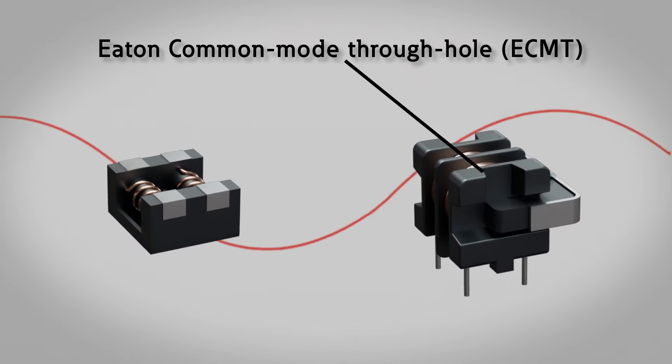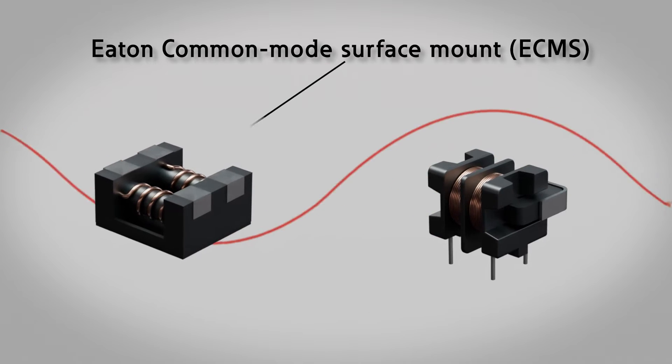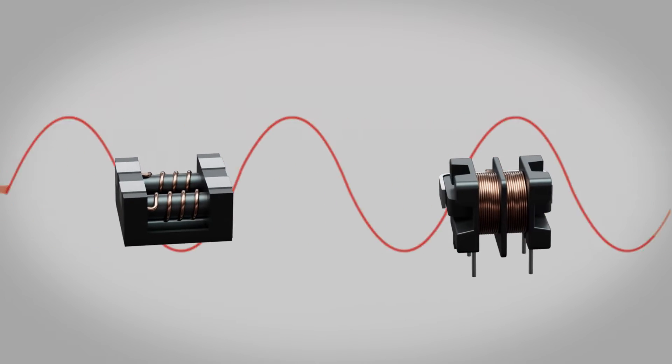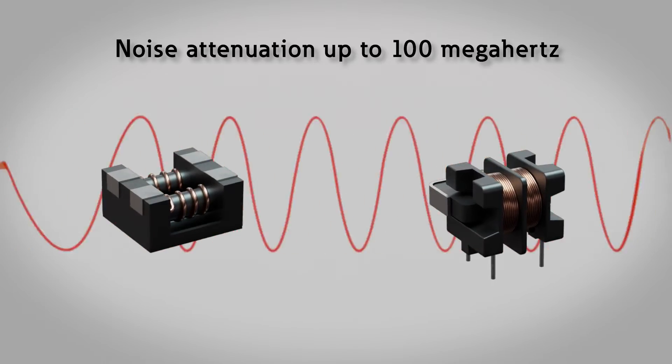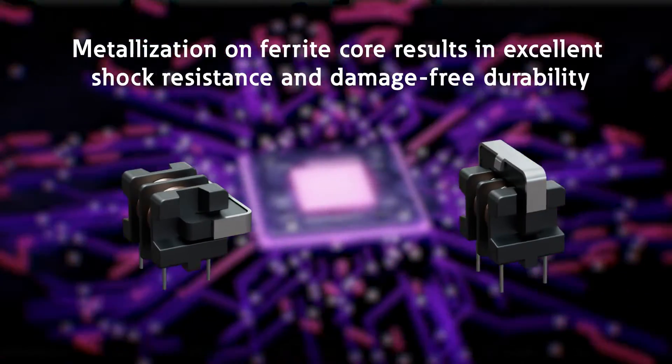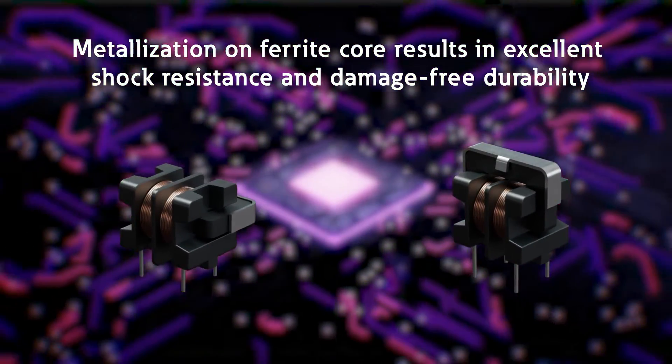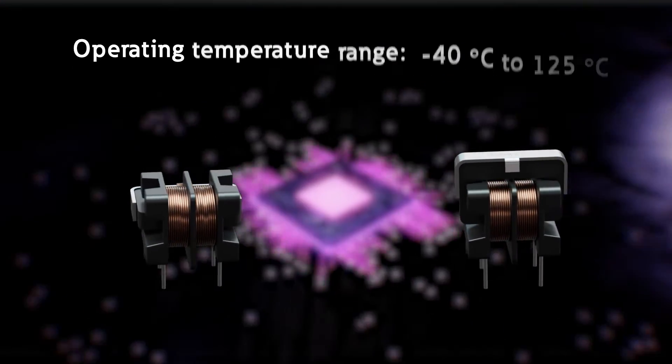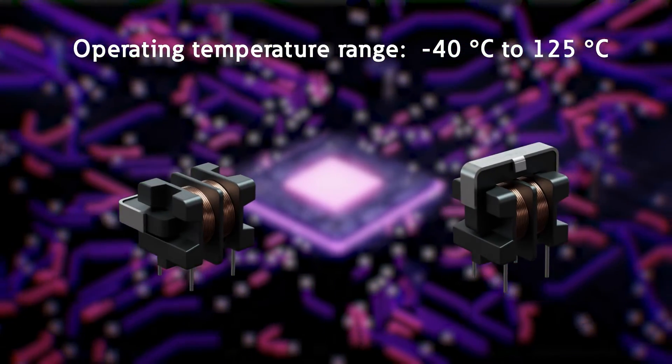Eaton's common mode through-hole ECMT and common mode surface mount ECMS family of chokes are ideal for noise attenuation over a wide range of frequencies up to 100 MHz while reducing board size. The ECMTs feature metallization on the ferrite core that results in excellent shock resistance and damage-free durability for operation from -40 to 125 degrees Celsius.